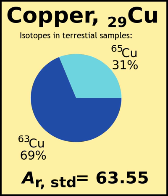The standard atomic weight is the atomic weight of a chemical element, as appearing and met in the earthly environment. It reflects the variance of natural isotopes of an element. Values are defined by the IUPAC definition of natural, stable, terrestrial sources. It is the most common and practical atomic weight used, for example to determine molar mass.